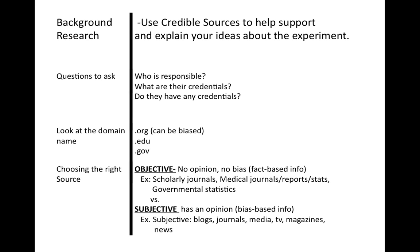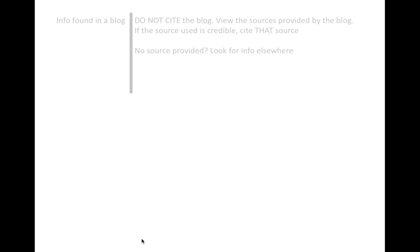Now when choosing the right source, you need to have a source that is objective, not subjective. Objective means no opinion or no bias, and these are like scholarly journals, reports, statistics. Governmental statistics is also okay. Subjective means it's opinionated, so you want to stay away from blogs, journals, media, TV, magazine, news.